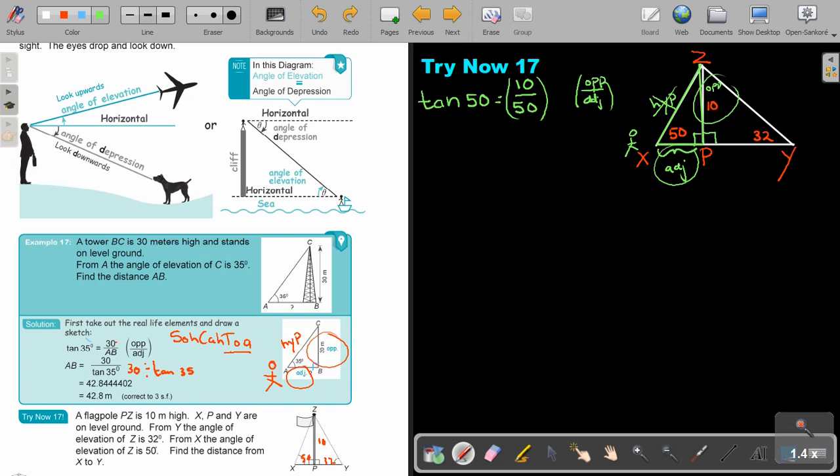Sorry, I made a mistake there. Let me just redo. If the unknown is at the bottom, so it's going to be XP, then it's division. So it's going to be XP equals 10 divided by tan 50. And that is going to give me an answer of 8.391. Take it a little bit more than three significant figures.